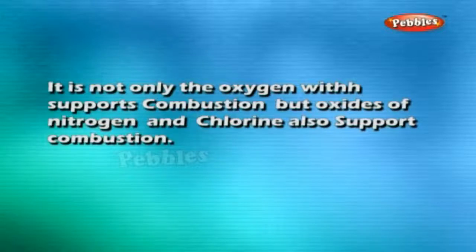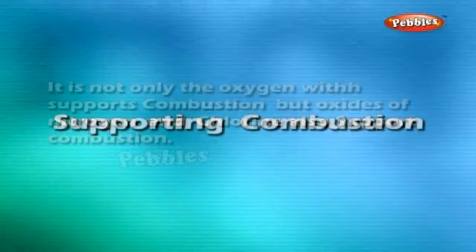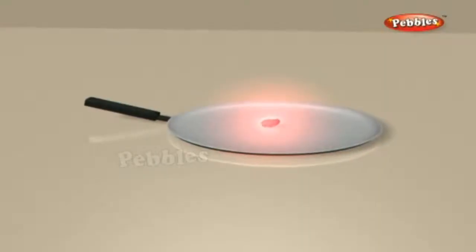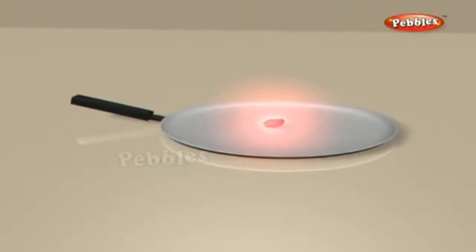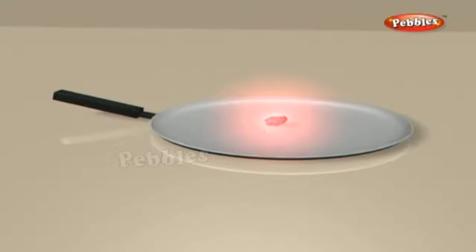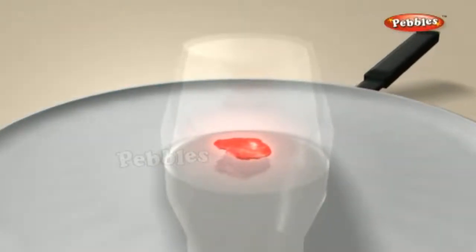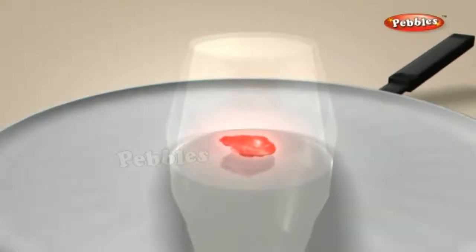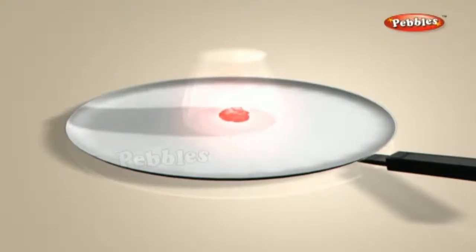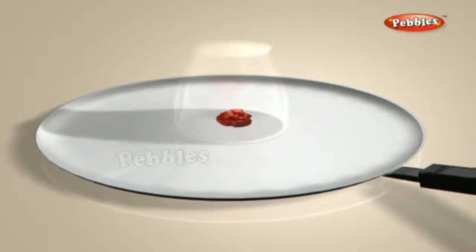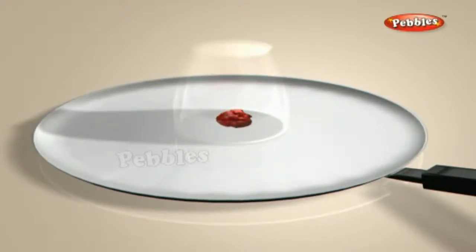Hence, substances which have a very low ignition temperature and can easily catch fire with a flame are called inflammable substances. Examples are petrol, alcohol, liquefied petroleum gas (LPG), etc. This type of fast burning is called rapid combustion. LPG, liquefied petroleum gas, and dry grass are examples. Sometimes, a large volume of gas is liberated rapidly during combustion, leading to an explosion.